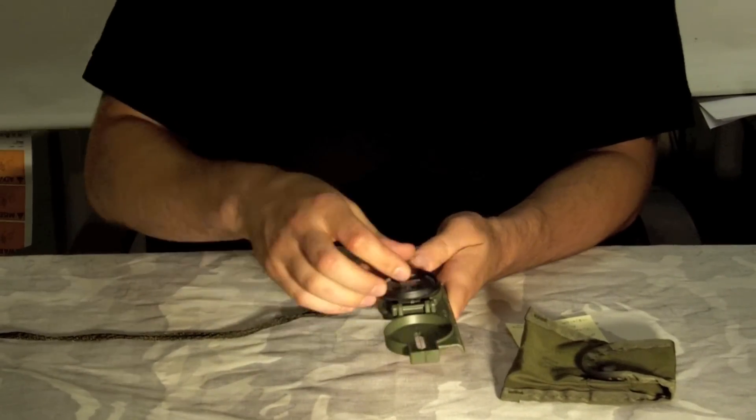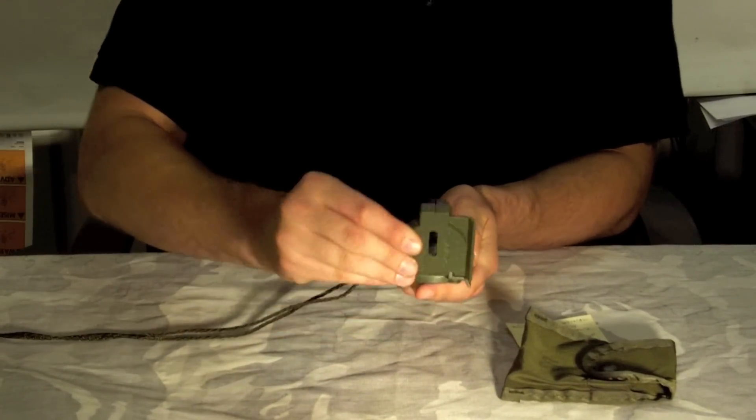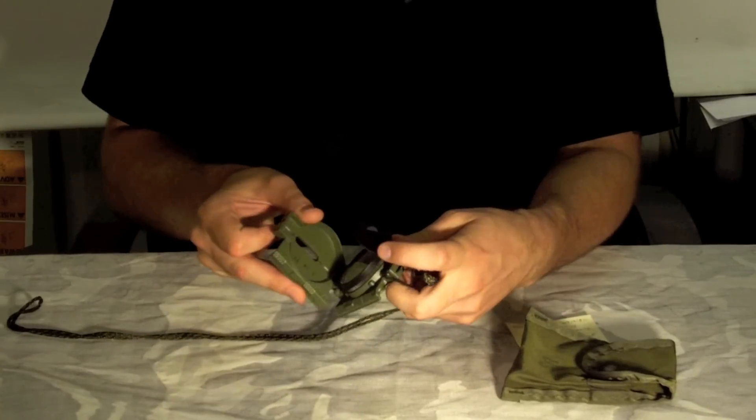Now you have all the features of a really nice military compass here. You have a crosshair, you also have the magnifier on it.